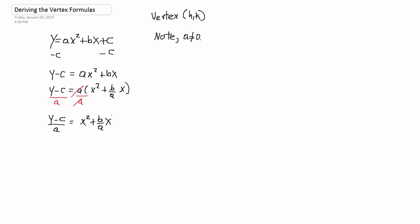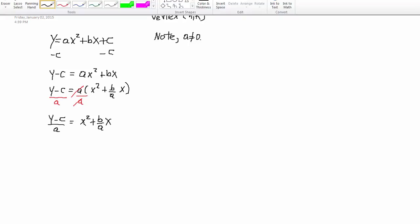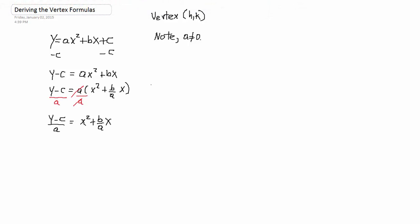Now, here is where I'm actually completing the square. I'll take the linear coefficient, B over A, and I'll multiply it times a half. And then that number, I'll square it. So, B over A times a half, all of that squared. So, that's going to be B over 2A, all of that squared, which is B squared over 4A squared.